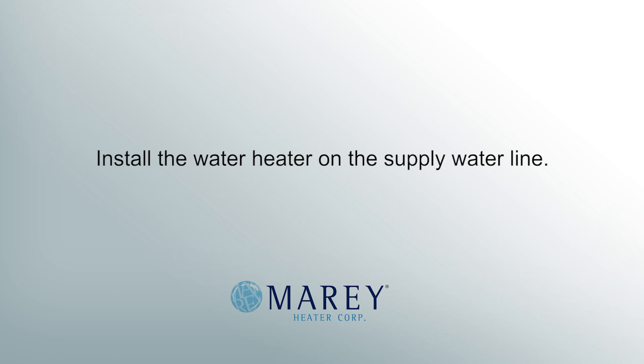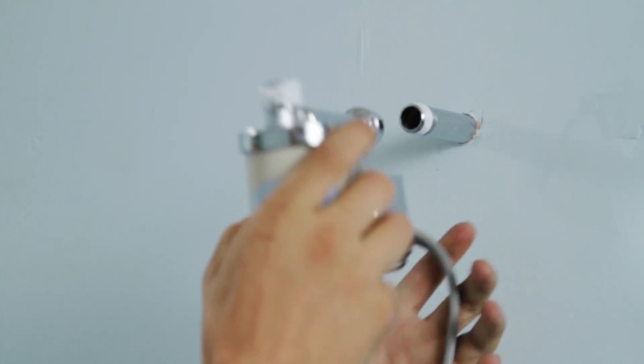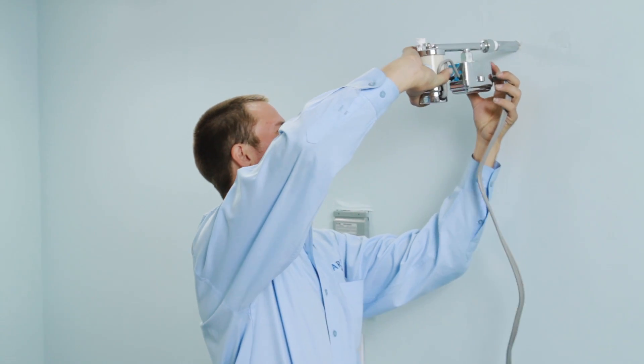Install the water heater on the supply water line. Screw the unit onto the water supply, tighten gently, but do not over-tighten. Over-tightening can damage your water heater.